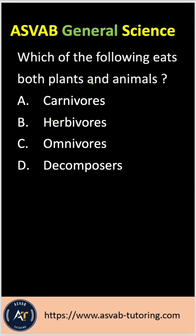The question says: 'We saw the following eats both plants and animals.' Option A: carnivores. Option B: herbivores. Option C: omnivores. Option D: decomposers.